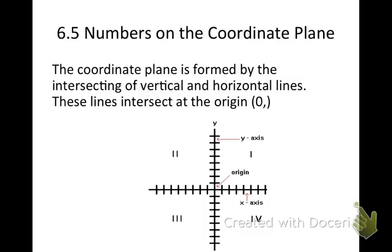The coordinate plane is formed by the intersecting of vertical and horizontal lines. Vertical is up and down. Horizontal is left and right. These lines intersect at the origin, which is at 0, 0.